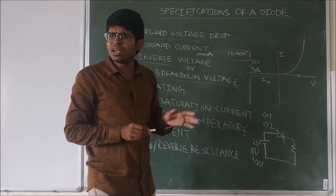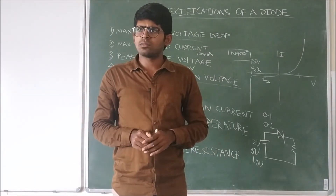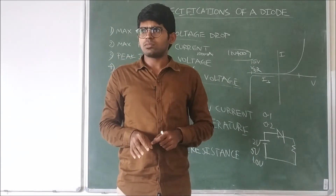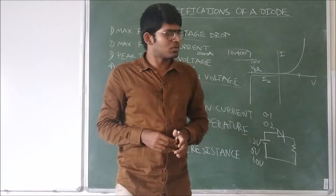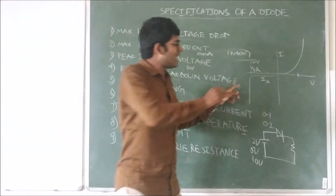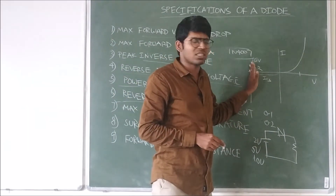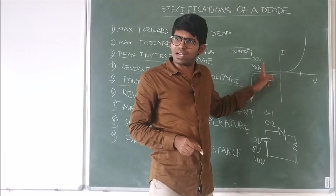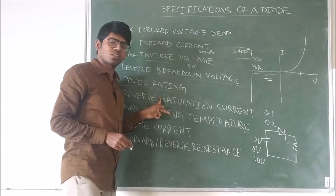Power rating — what is this power rating? It is the maximum power the diode can withstand without being destroyed. If the power rating of the diode is 500 milliwatts, so the maximum power rating the diode can withstand without destroying is 500 milliwatts. What is reverse saturation current? It is the maximum current we are getting before the breakdown voltage — that current is called reverse saturation current. The specifications in the diode also include the reverse saturation current.